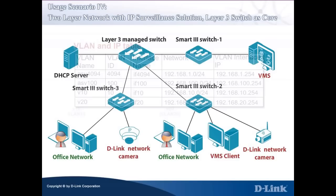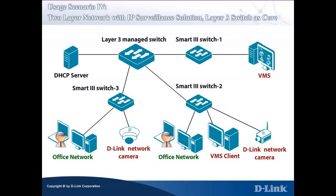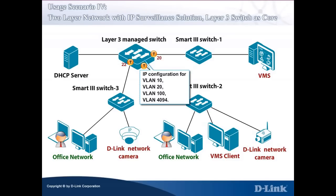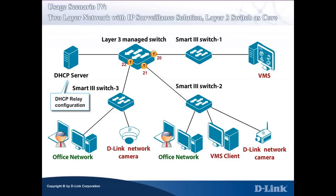For the Layer 3 managed switch, the following configurations are required. First, VLAN configuration and addition of tagged ports to VLANs — remove the default VLAN and add tagged ports 20, 21, and 22 to VLAN 10, VLAN 20, VLAN 100, and VLAN 4094 respectively. Second, the IP configuration for each of the VLAN interfaces. Third, DHCP relay configuration — assume the existing DHCP servers are properly configured.